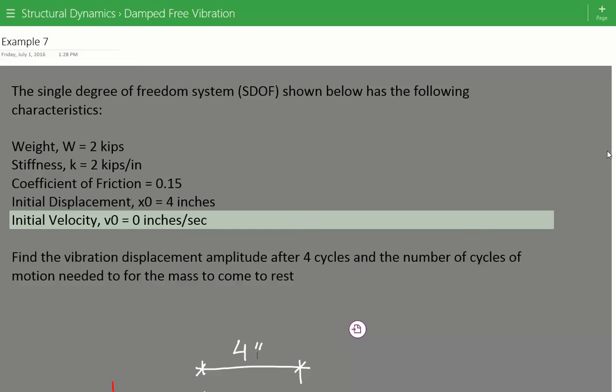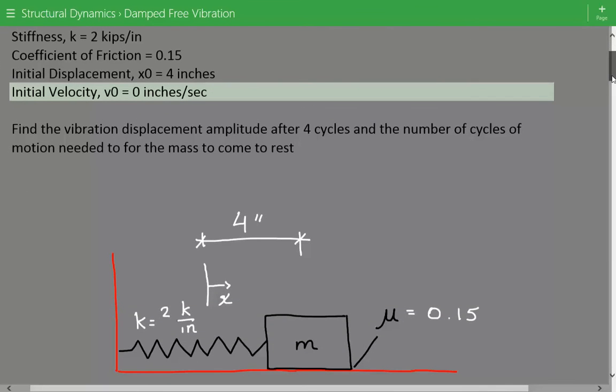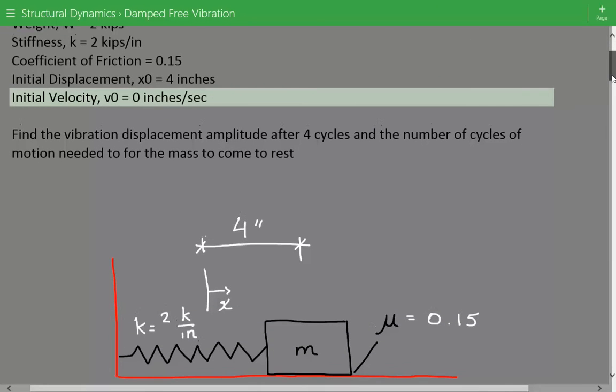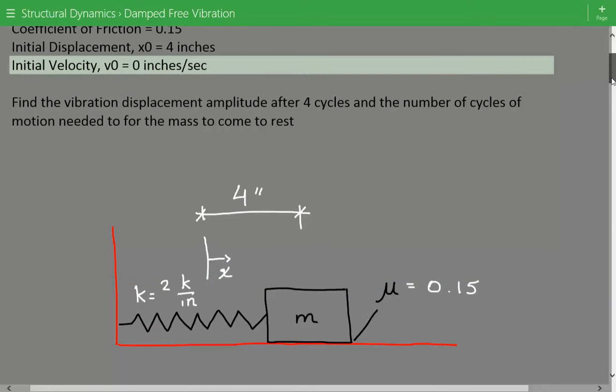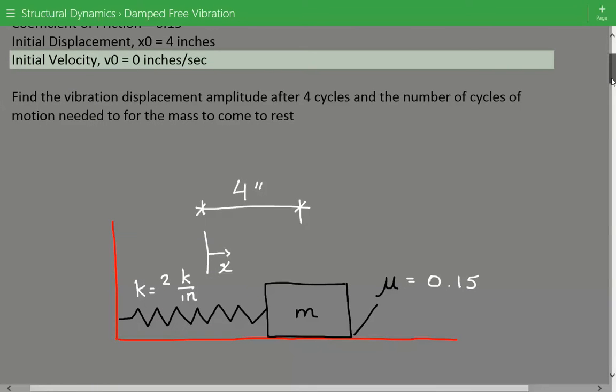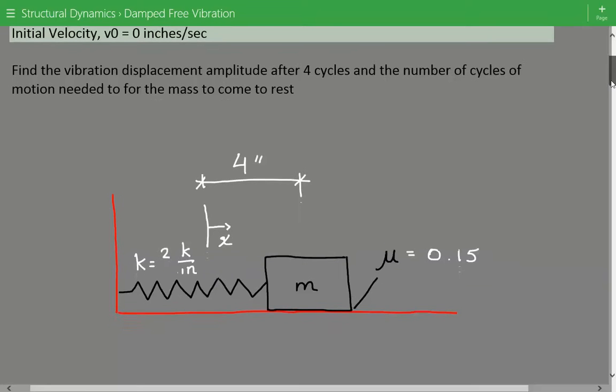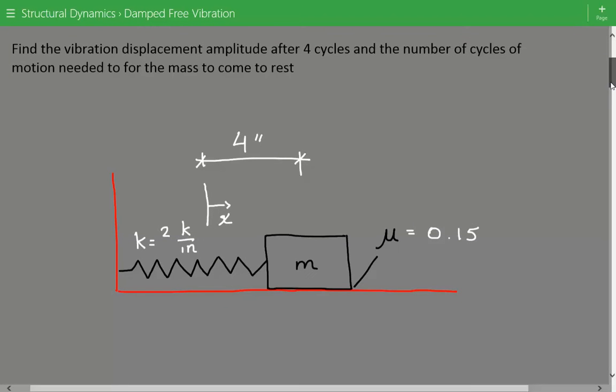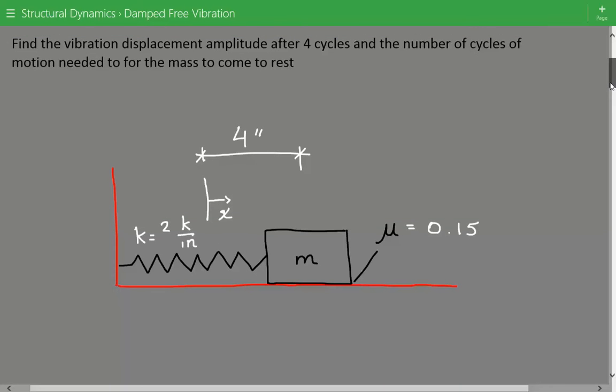The problem statement is that we have a single degree of freedom system with the following characteristics. The weight of the mass is equal to two kips. The spring stiffness is equal to two kips per inch. The coefficient of friction is equal to 0.15 and the mass has an initial displacement of four inches and an initial velocity of zero inches per second. We need to find the vibration displacement amplitude after four cycles and the number of cycles of motion needed for the mass to come to rest.